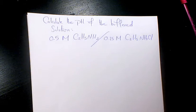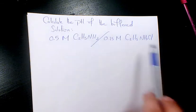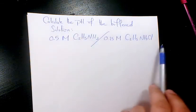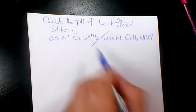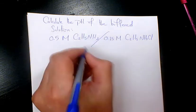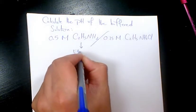So what we have here is C2H5NH2 and C2H5NH3Cl. C2H5NH2 is ethylamine.